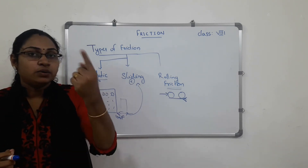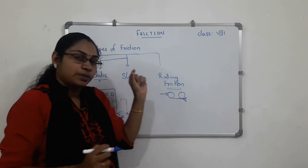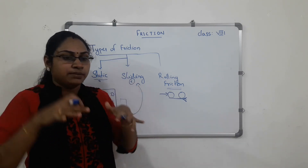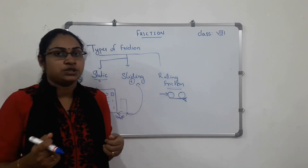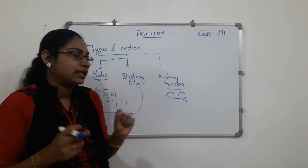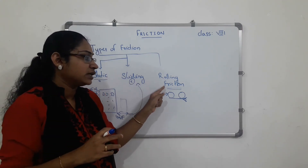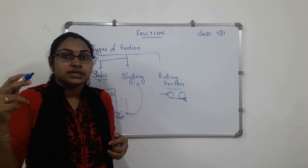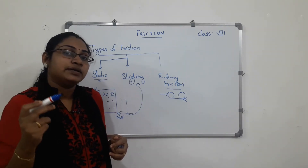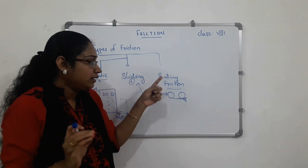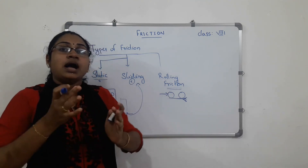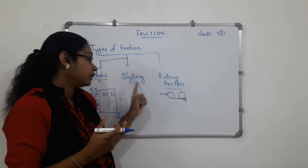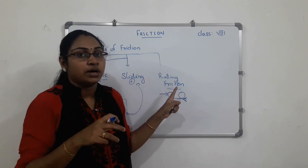Now let's look at rolling friction. For example, in a supermarket or airport, I use a trolley. Instead of sliding a heavy object, we use wheels — tires or a rounded shape. When an object rolls, the surface contact is reduced and so the friction is smaller. Rolling friction is less than sliding friction, which is less than static friction.